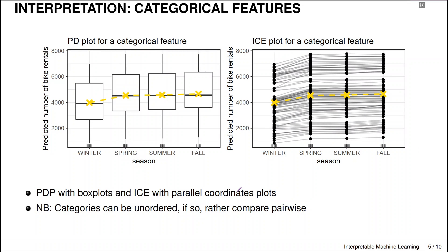We can also produce these PDP plots for categorical features. We can either do this with box plots or we can do this with parallel coordinate plots. So we just put our categorical feature now on the x-axis here. Hopefully our categories can be somehow reasonably ordered. If everything is unordered, we might just resort back to pairwise comparisons. So we didn't do that here on the slide.